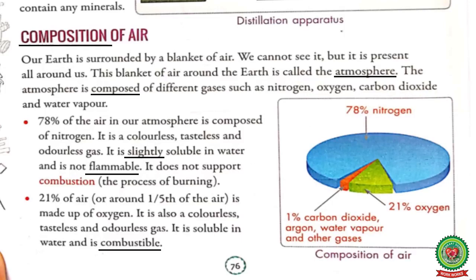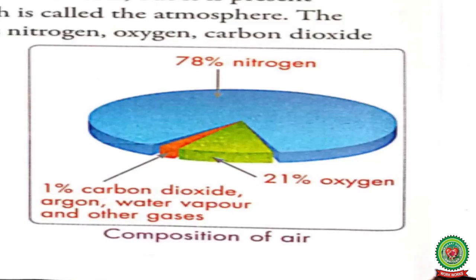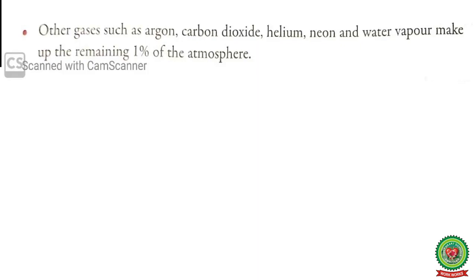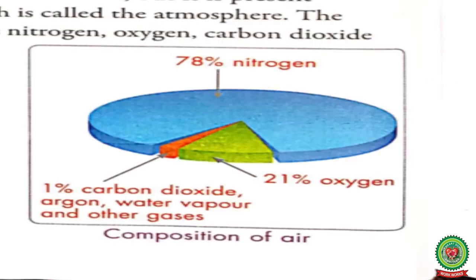Oxygen gas supports burning. Students, see the diagram. This green part shows that 21% oxygen is present in earth's atmosphere. Now number three is other gases. 1% other gases are present in earth's atmosphere. Gases like argon, carbon dioxide, helium and water vapor are present in 1% in the atmosphere. Now see the red part of the diagram — it shows 1% gases like carbon dioxide, argon, water vapor and other gases present in the atmosphere.